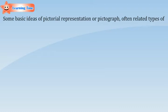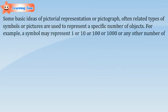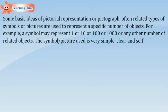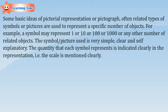Learning time. Some basic ideas of pictorial representation or pictograph: often related types of symbols or pictures are used to represent a specific number of objects. For example, a symbol may represent one, ten, hundred, thousand, or any other number of related objects. The symbol or picture used is very simple, clear, and self-explanatory. The quantity that each symbol represents is indicated clearly in the representation — that is, the scale is mentioned clearly.